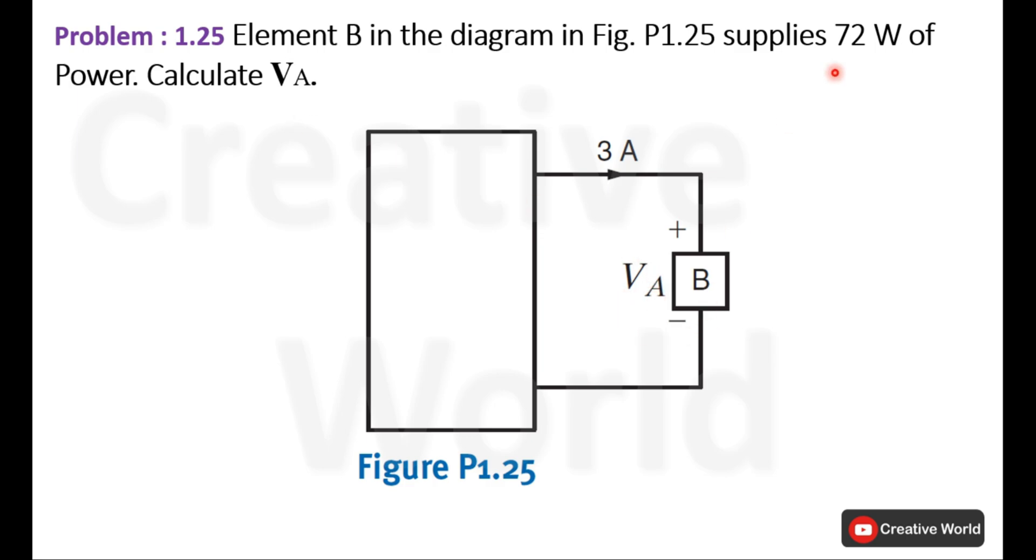Element B is supplying 72 watts. This information is very important, and the current through this element is also given: 3 amperes. The current direction is also important.